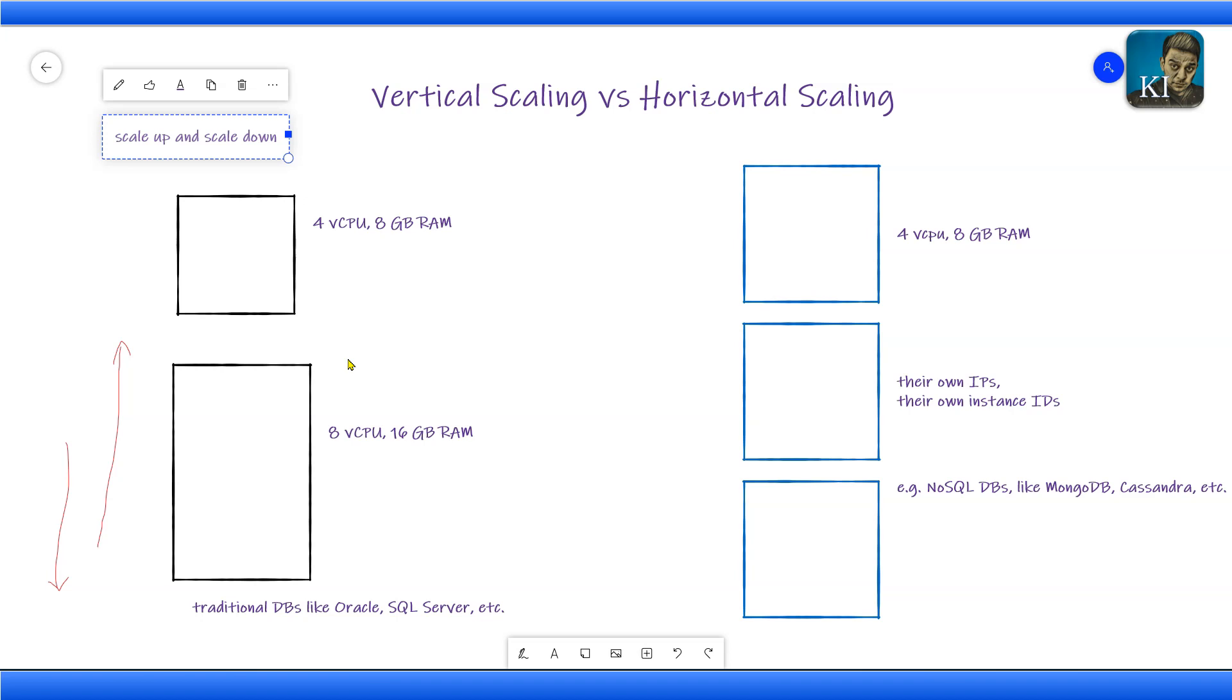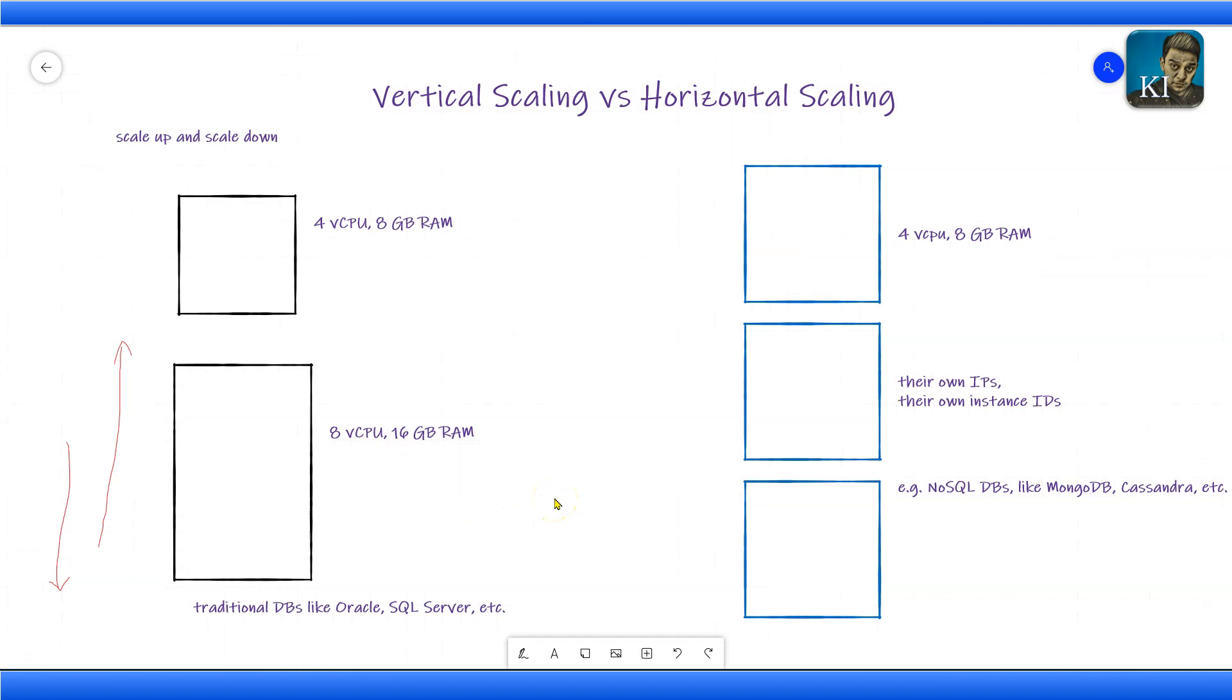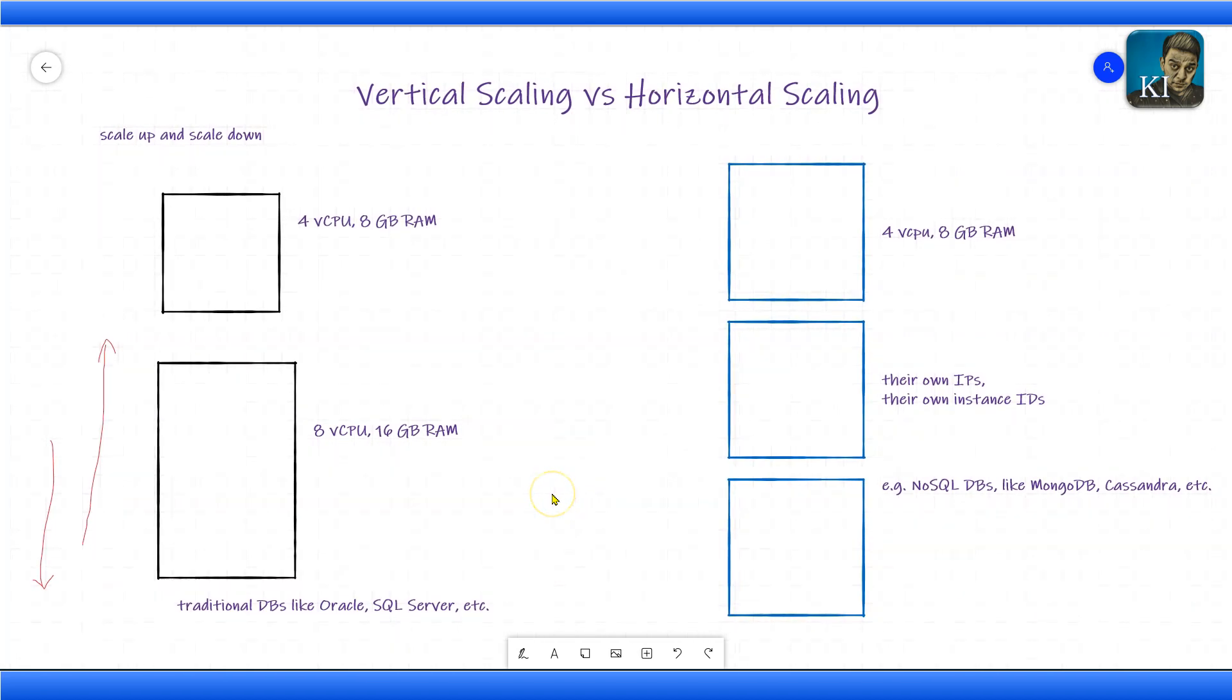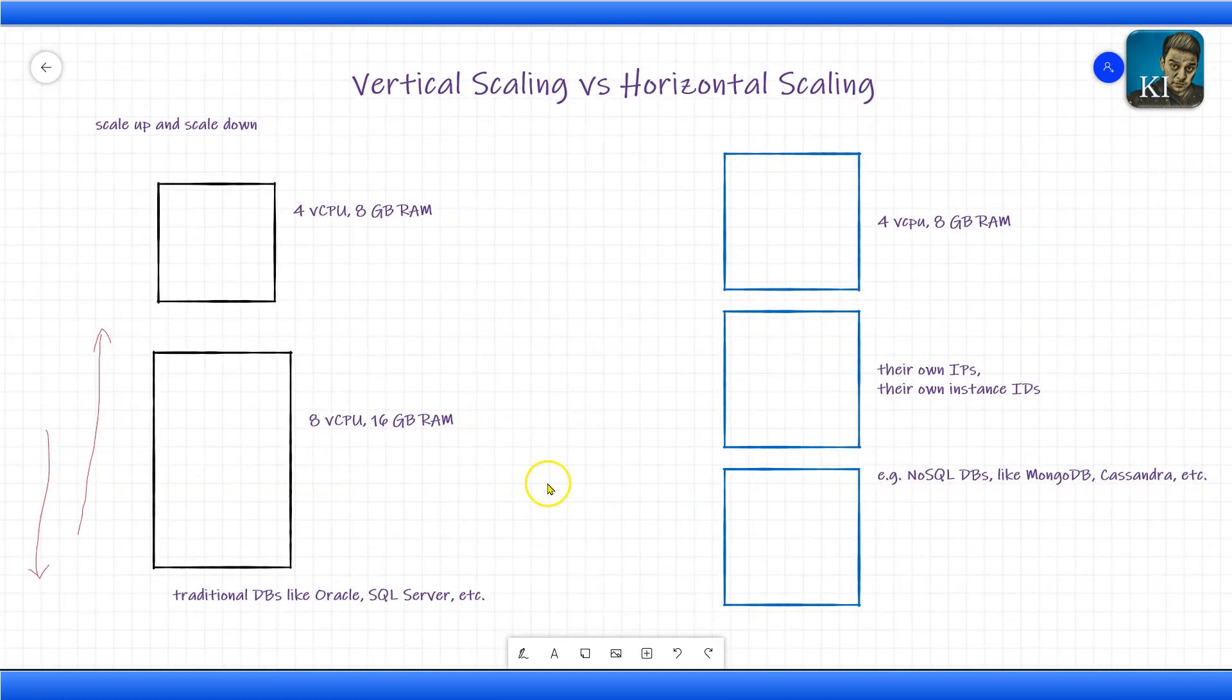The important thing to understand is when you do scale up or scale down, the other properties like the identifiers of your instance do not change. The private IP will not change, the instance ID will not change.